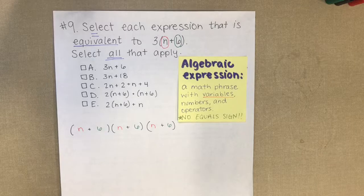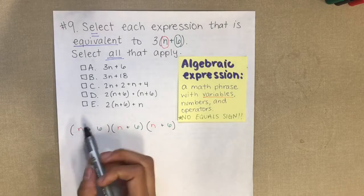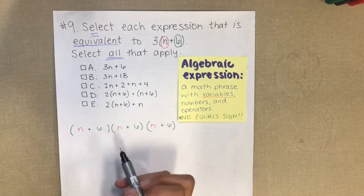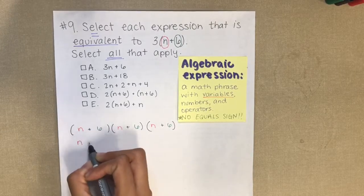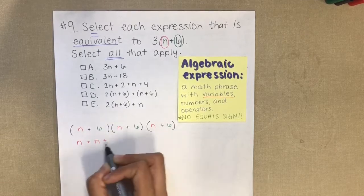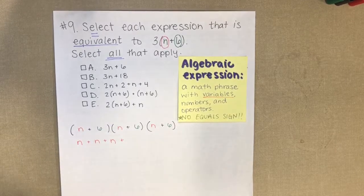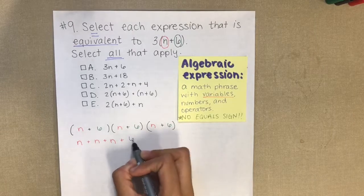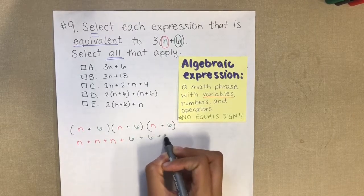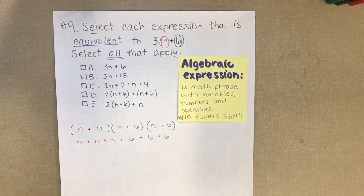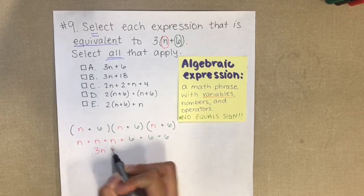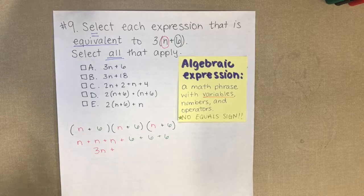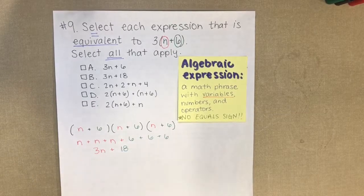Now I can simplify by combining like terms — variables raised to the same power. I have n plus n plus n, and then 6 plus 6 plus 6. So I reorganize everything: how many n's do I have? I have 3 n's. How many 6's do I have? I have a total of 18.